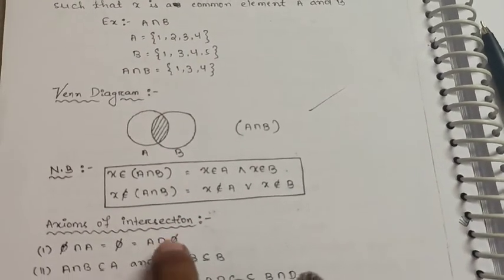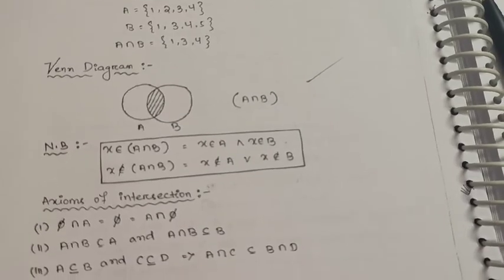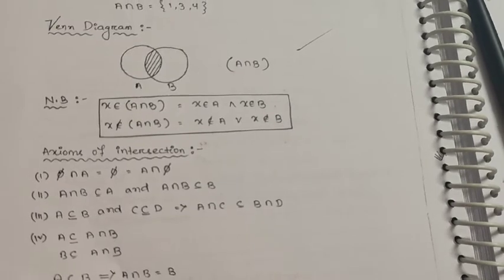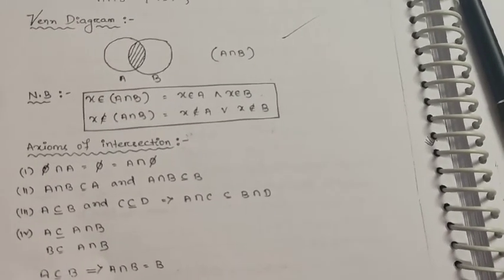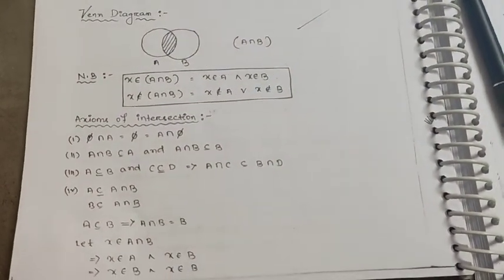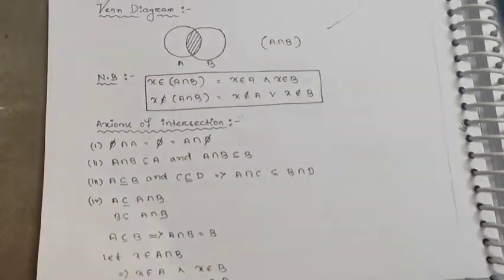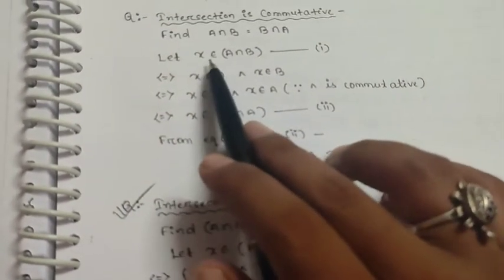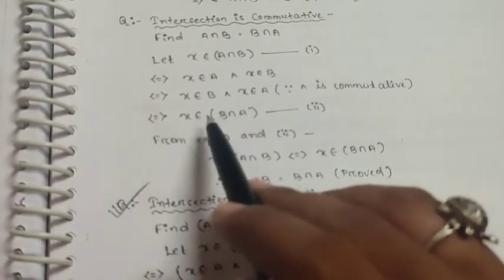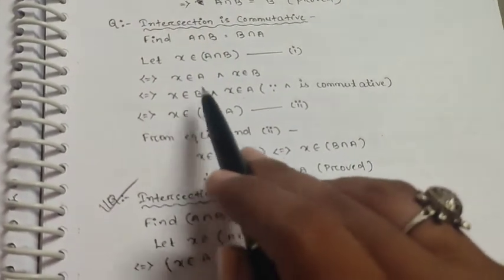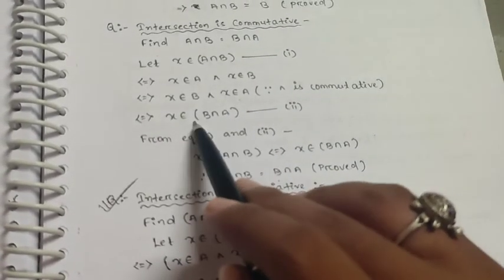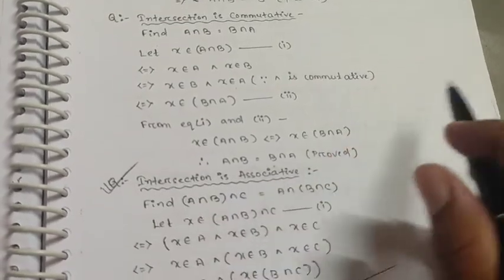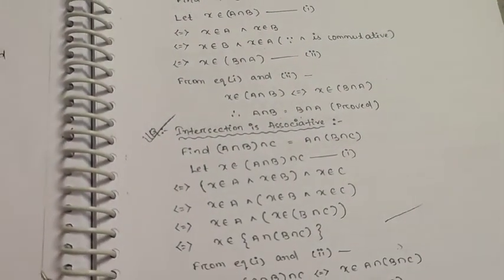Axioms of intersection: A intersection phi equals phi. Also, A intersection B is a subset of A, and A intersection B is a subset of B. If A is a subset of B and C is a subset of D, then A intersection C is a subset of B intersection D. Intersection is commutative: A intersection B equals B intersection A.